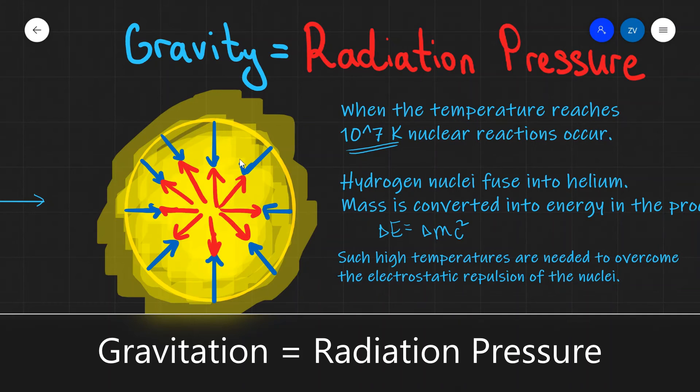Once the star is formed, the thermonuclear reactions inside the core produce radiation pressure. This radiation pressure equals the force of gravity, which is trying to crush the star even further. When the star is at balance and the radiation pressure equals the force of gravity, the radius of the star is constant and the star just happily burns through its hydrogen supply.